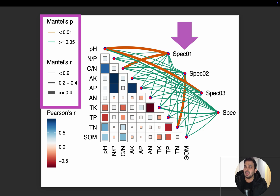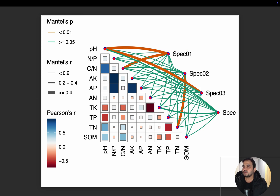Species one has several trend lines. We can see it has a positive trend line with pH, and the p-value is less than 0.01, so this is significant — species one is significantly correlated with pH. It is also significantly correlated with carbon to nitrogen ratio. When the line color is green, the p-value is more than 0.05.